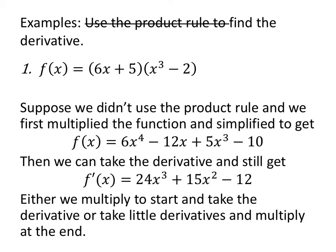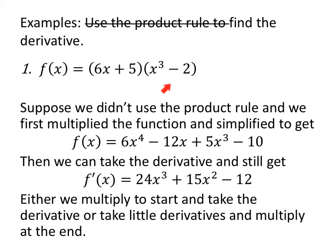Why does that matter? Suppose we didn't use the product rule and just wanted to find the derivative — we might just FOIL this. 6x times x³ is 6x⁴, 6x times negative 2 is negative 12x, 5 times x³ is 5x³, and 5 times negative 2 is negative 10. With a polynomial we could take the derivative: the derivative of 6x⁴ is 24x³, the derivative of 5x³ is 15x², the derivative of negative 12x is negative 12, and the derivative of negative 10 is 0. So we can multiply first and then differentiate, or differentiate using the product rule and multiply at the end — but you're not getting out of the algebra either way. One step of calculus, but mostly algebra.